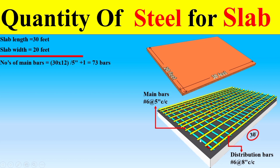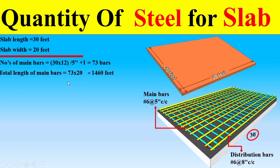Now dear students, if I want to calculate the total length of the main bars, as you can see the length of one main bar is 20 feet. So if the total number of bars is 73, I will multiply 73 by 20 feet, which gives the total length of the main bars.